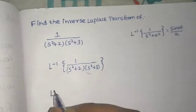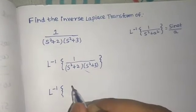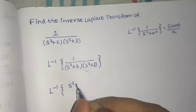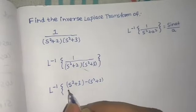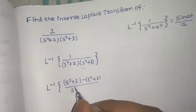So we'll make an adjustment. We'll write the numerator as (s²+3) minus (s²+2), divided by this denominator.